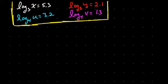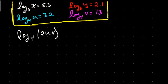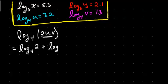I'm going to work through a few problems. For example, log base 4 of 2uv. From our properties of logarithms, we know that when we're multiplying in here, we are adding exponents. And remember, the log gives us exponents. So this is log base 4 of 2, plus log base 4 of u, plus log base 4 of v.